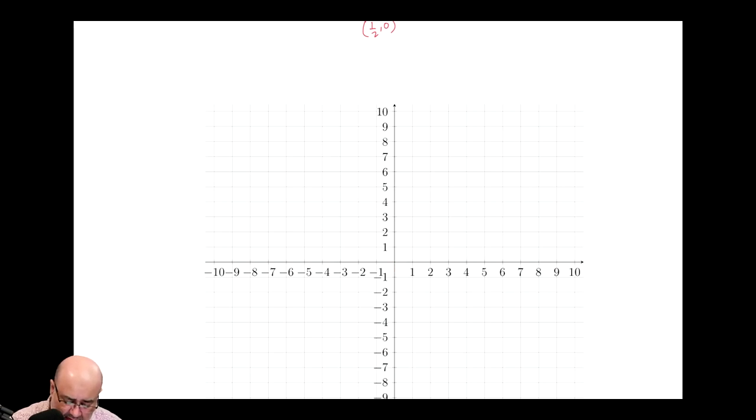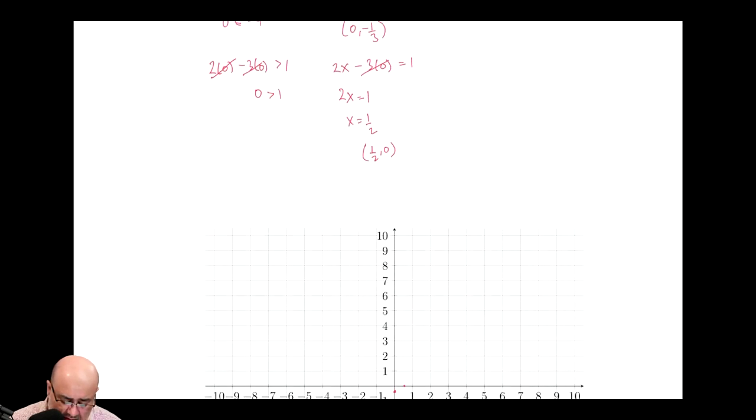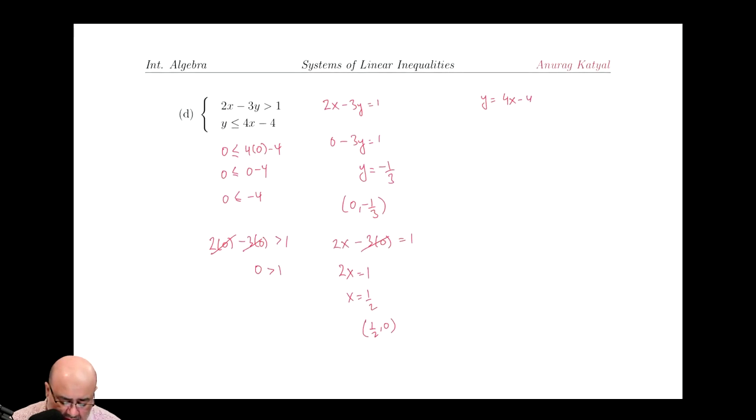So that's roughly here. And then the second point is 1 half comma 0, so 1 half comma 0 is there, and then I'm connecting these two dots using a dashed line.